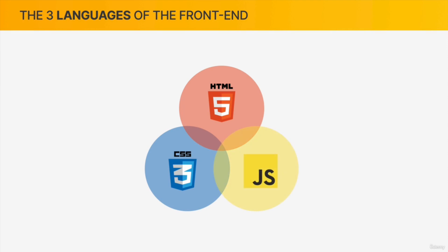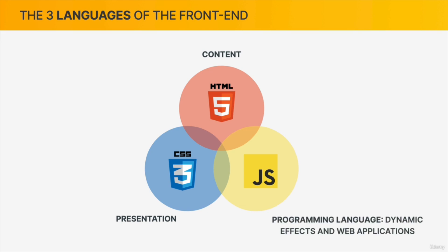Starting with HTML, it is responsible for the content of the page — the text, images, buttons, and really all the content you see on a web page is written inside an HTML file. CSS is responsible for the presentation of that content — basically for styling and laying out the elements on the web page. JavaScript is the actual programming language of the front end. It allows us to add dynamic and interactive effects to web pages, manipulate content or CSS, load data from web servers, and even build entire front end applications, which we call web applications.